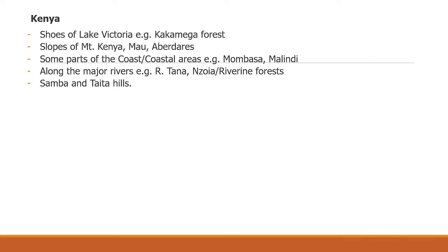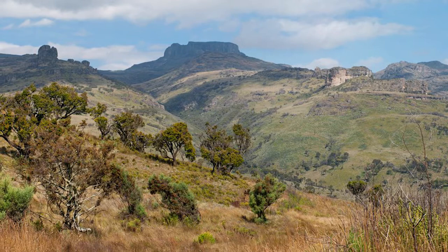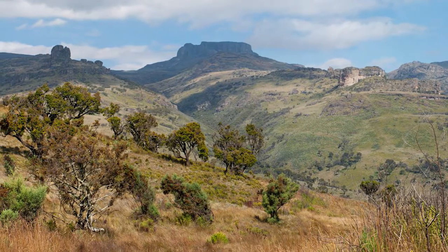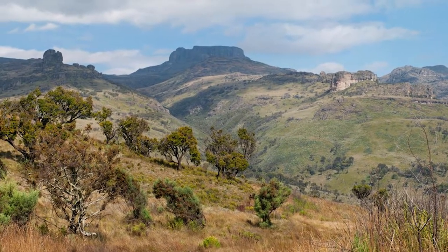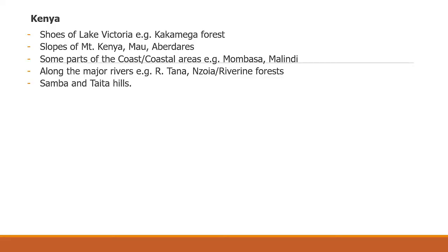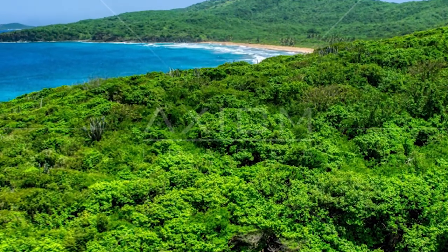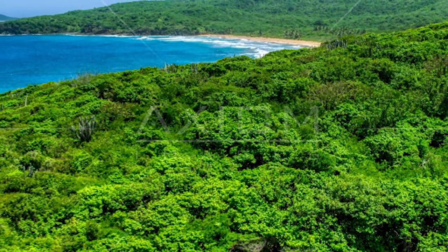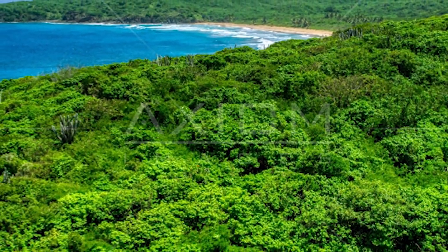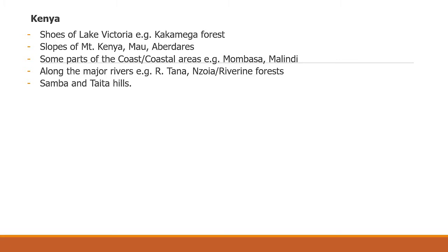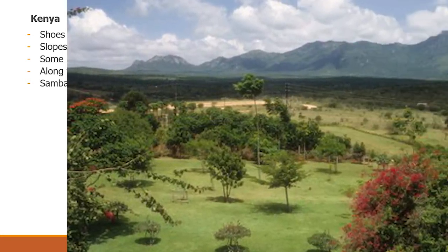In Kenya, tropical rainforests are found along the shores of Lake Victoria — for example, Kakamega Forest — on the slopes of Mount Kenya, Mau, and Aberdare Ranges, and in some parts of the coastal areas — for example, Mwambasa and Malindi. Along major rivers, for example, River Tana and River Mzoya. They are also found in Samburu.